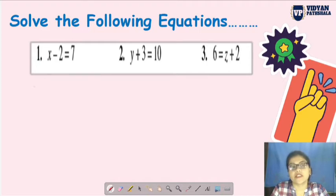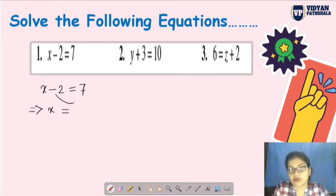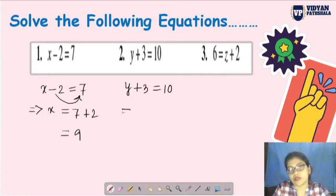So x minus 2 plus 2 equals 7 plus 2. Minus 2 and plus 2 cancel out. Here we get x equals the answer, which is 9. Now, instead of this method, there's another method I told you about - transposing. Taking from this side to that side, meaning left hand side to right hand side, or right hand side to left hand side. I think that method will be easier for you.